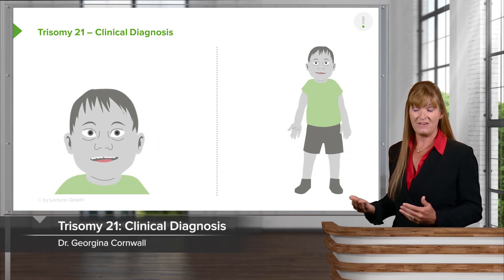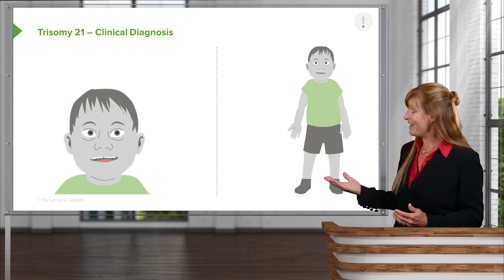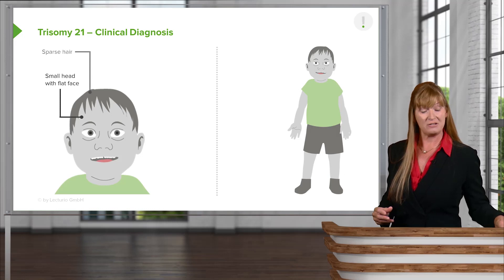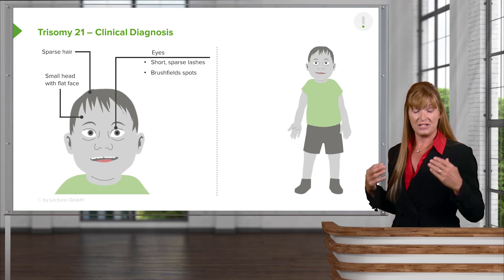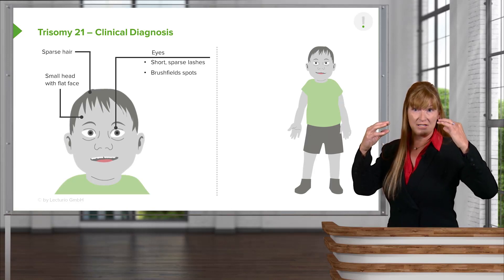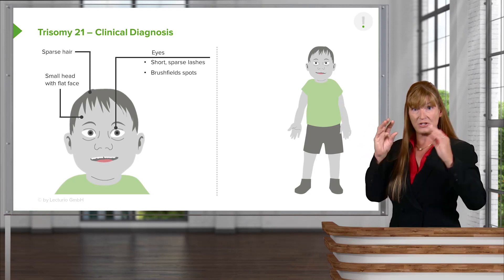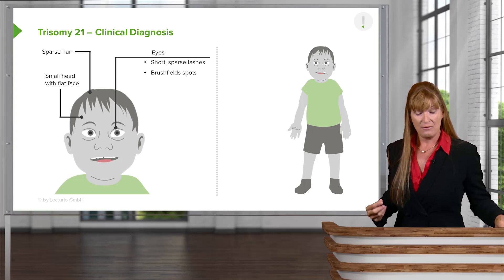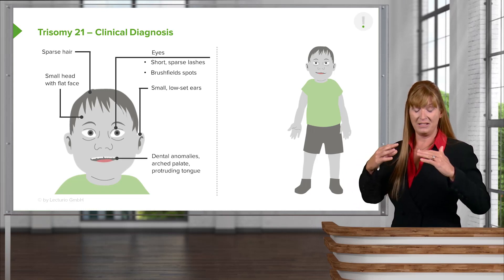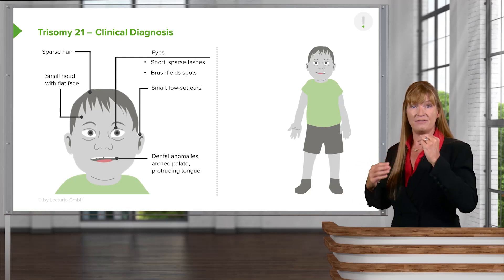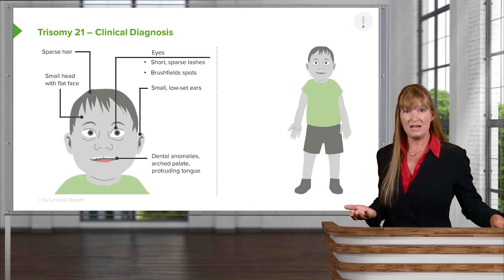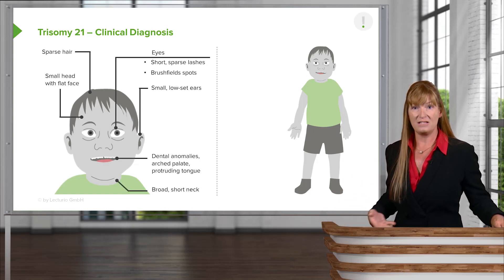We'll take a specific look at some of the clinical features we might see in a Down syndrome child. In general, we'll see a smaller head, smaller face, fairly sparse hair, as well as some changes to the eyes — fairly short eyelashes and bright Brushfield spots, which are small white spots around the iris. We also might see small and fairly lower-set ears, as well as some abnormalities in the palate — the palate is slightly arched and often we'll notice a protruding tongue. Down syndrome has a pretty consistent manifestation, including a broader, shorter neck.